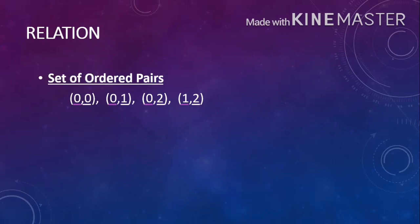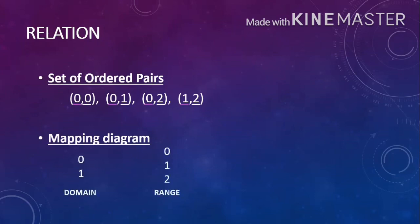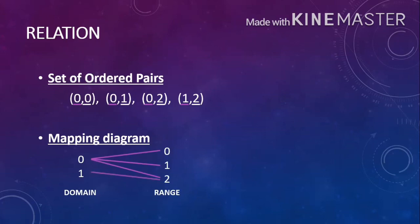The other way is through a mapping diagram. You may notice that the x values or the domain are on the left side of the diagram, while the y values or the range are on the right side. Domain 0 maps to range 0, domain 0 maps to 1, domain 0 maps to 2, and domain 1 maps to output 2. That is how you do a mapping diagram.